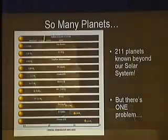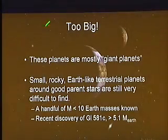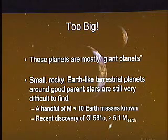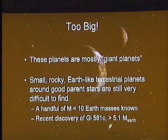We have so many planets out there — there are about 211 now known. But there's one problem with all of these planets we have found so far: most of them are too big. These planets are mostly gas giant planets. The small, rocky, Earth-like terrestrial planets that we want to find around good parent stars are still very difficult to find.